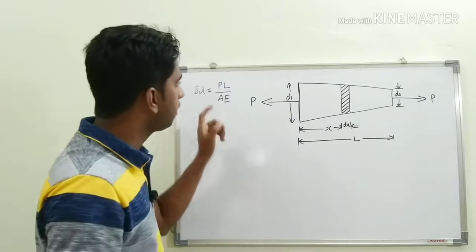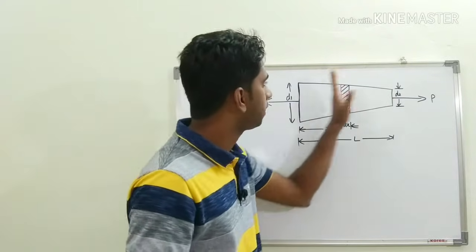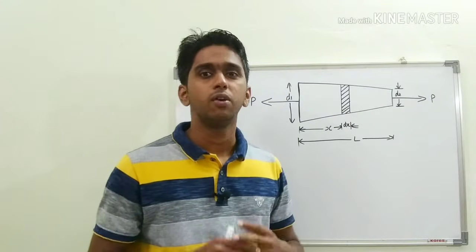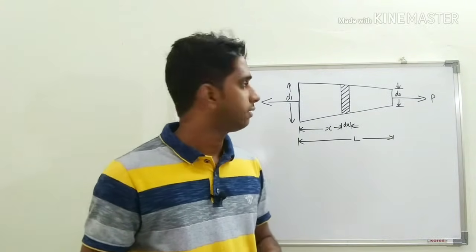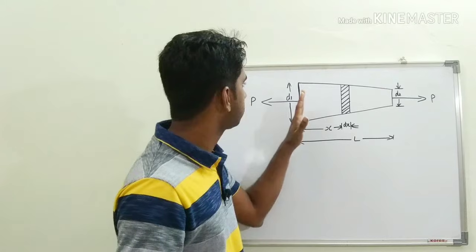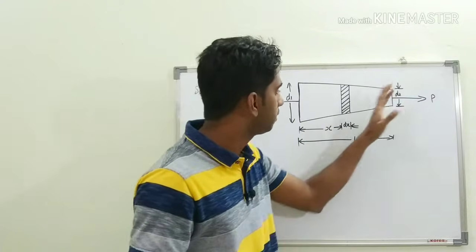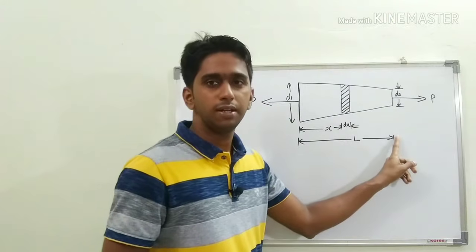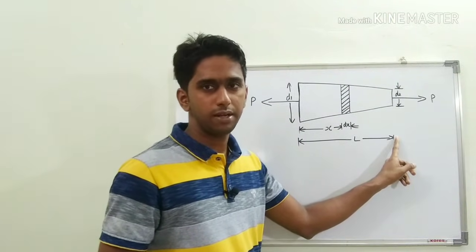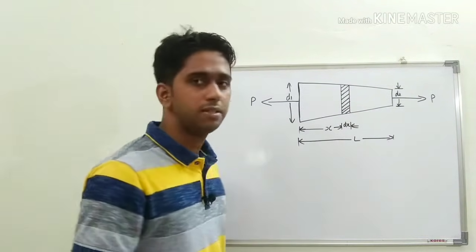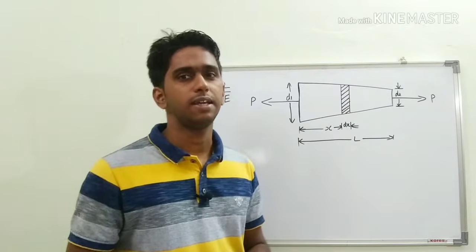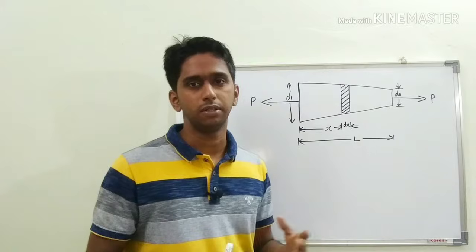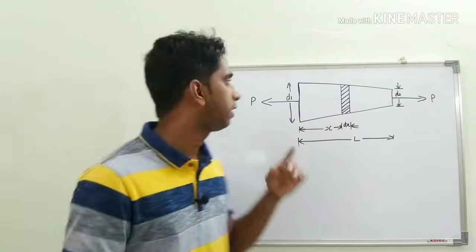The area keeps on varying as we move from the left end to the right end — in this case the area keeps on decreasing. That means area is not a constant; area is a variable.